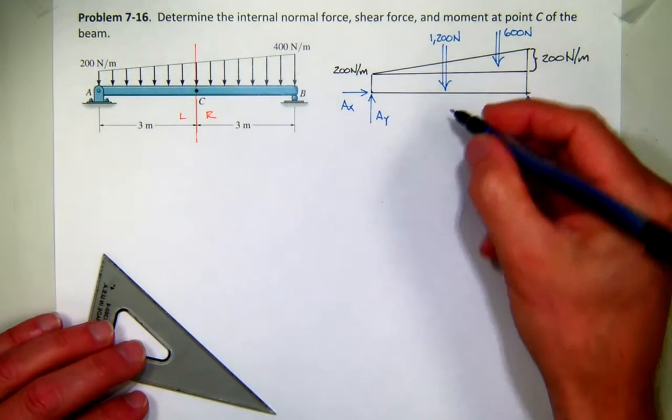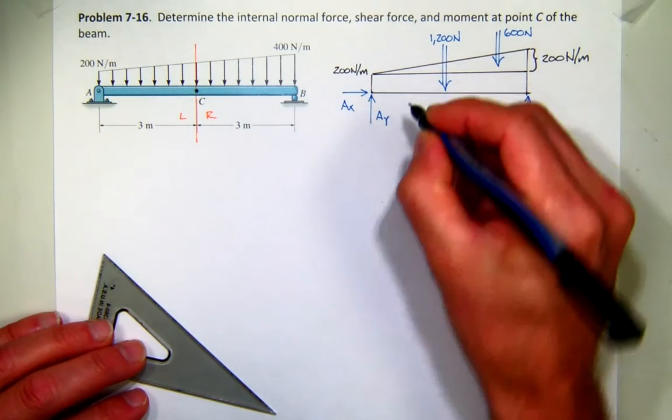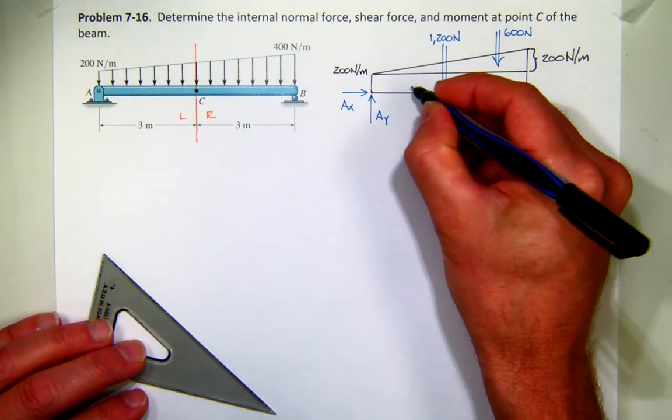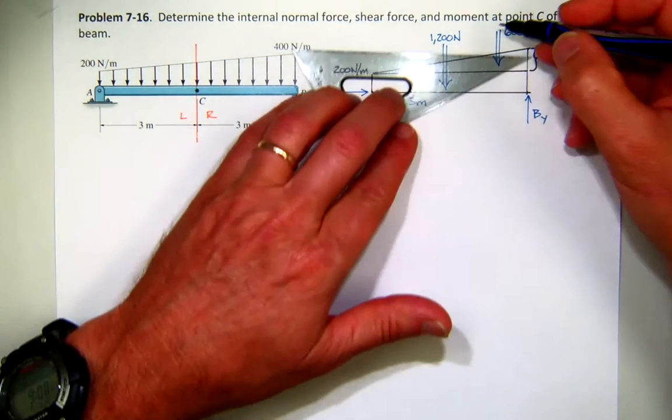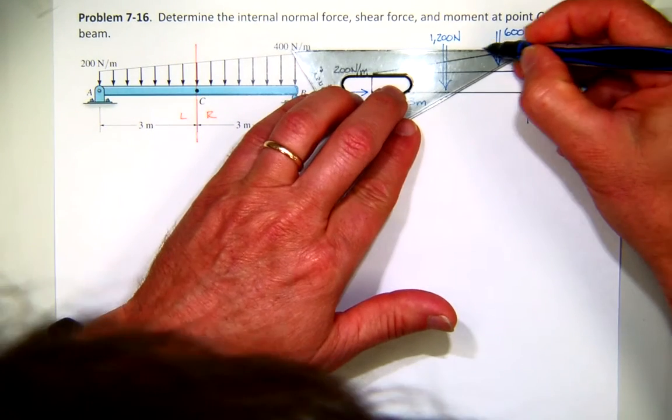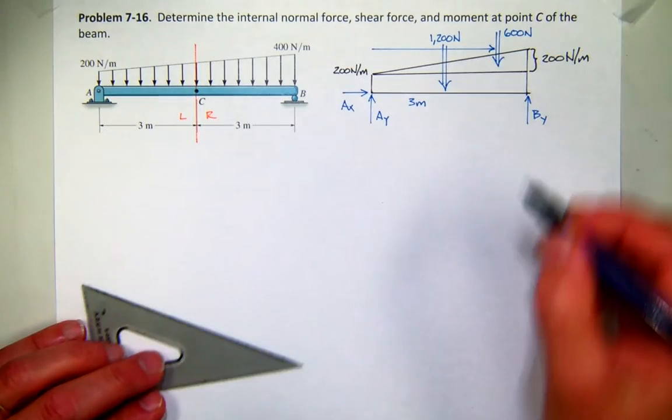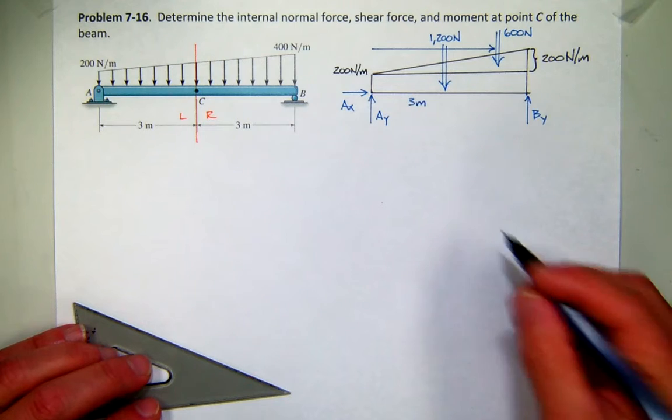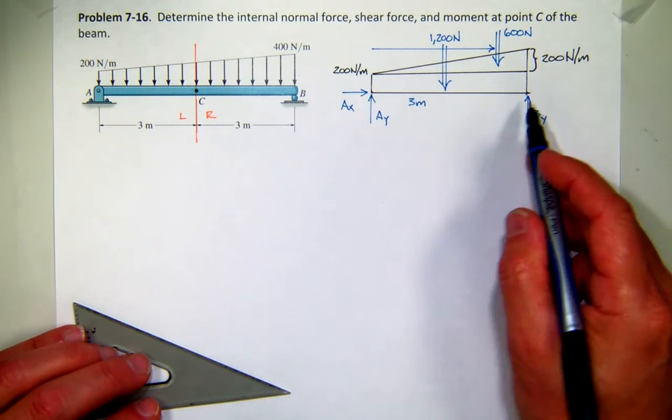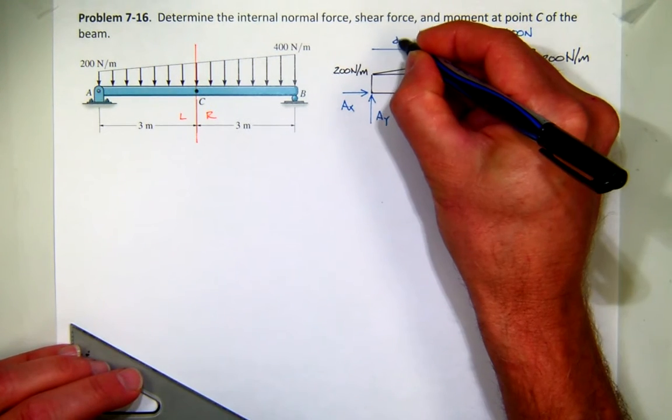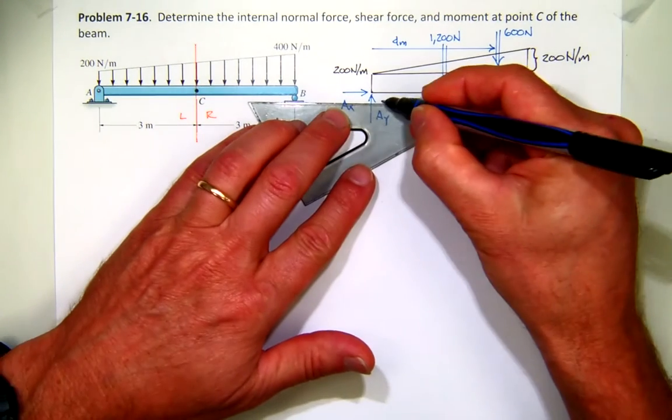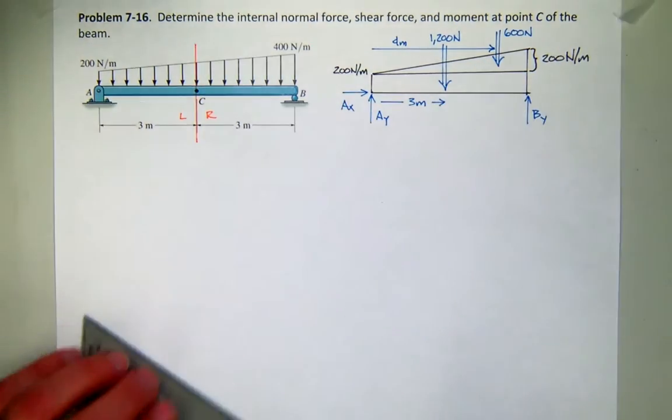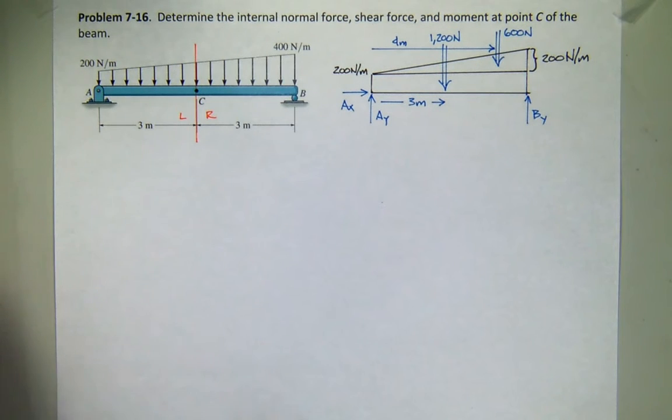Now, the distances. I'm going to sum moments about A, so this distance would be 3 meters. And what's the distance to this force? Well, from A, it's going to be two-thirds the distance, and two-thirds of 6 is 4 meters.